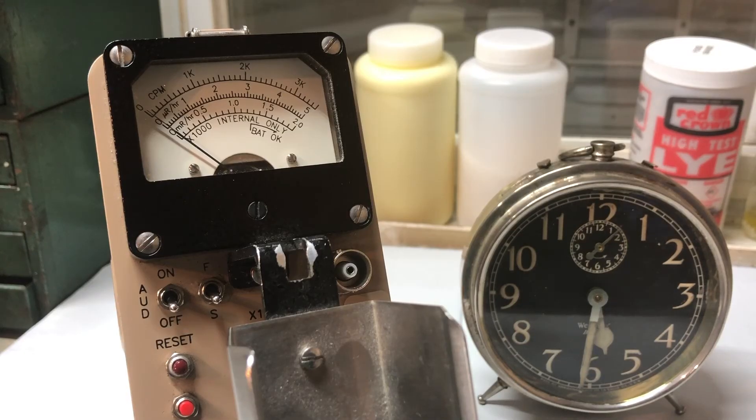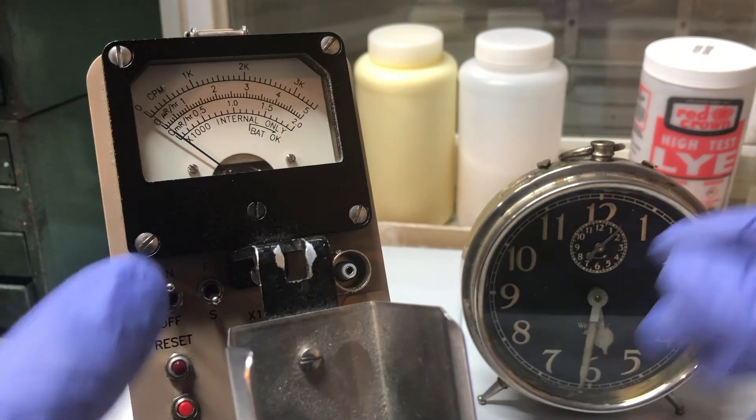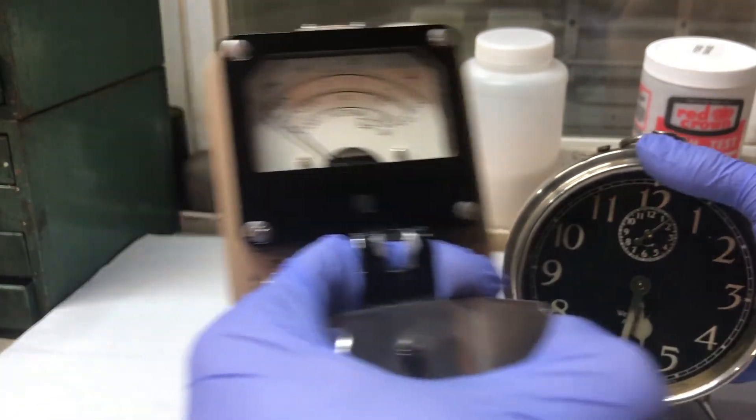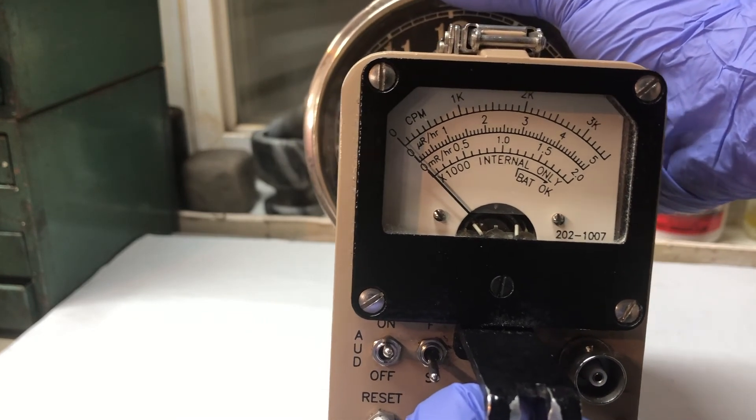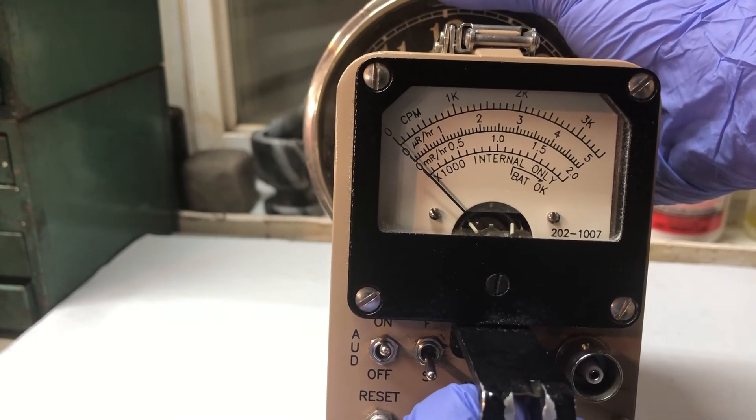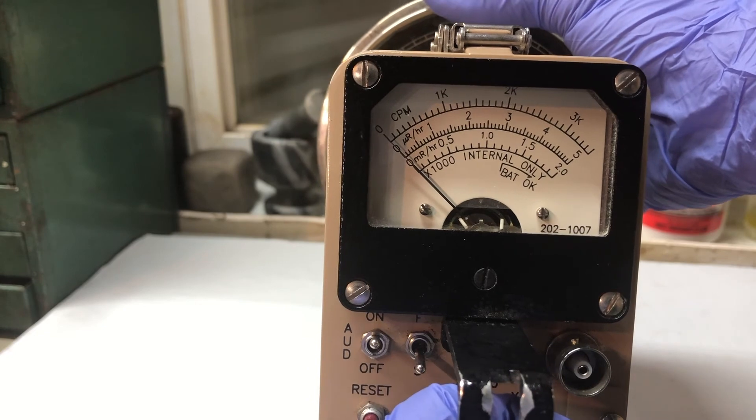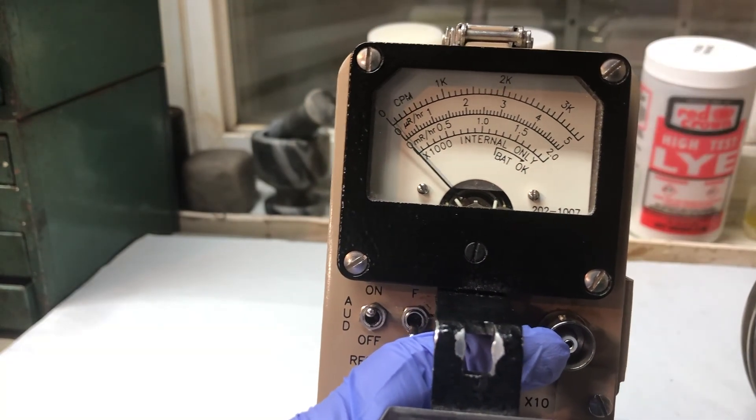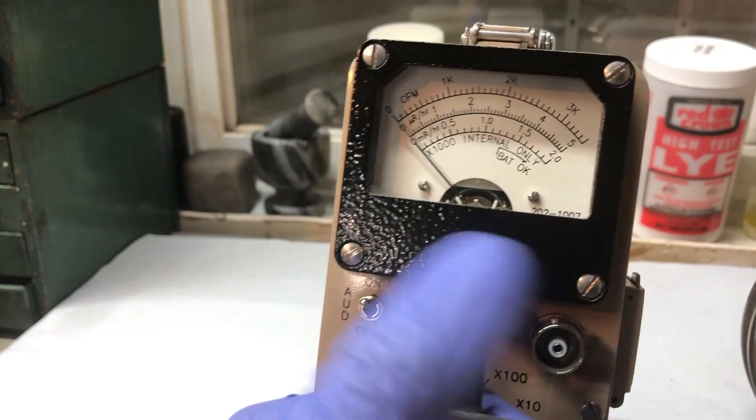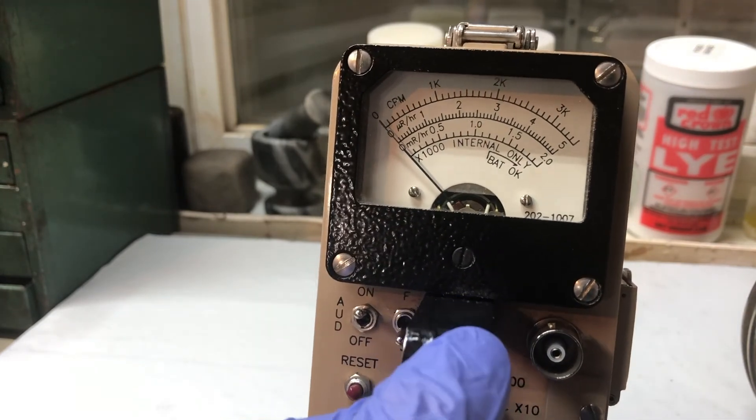So let's set it to times 1000 and turn the audio on and move the clock towards the back. The meter doesn't really move that much, but you can hear the audible chirping. The times 1000 is only in situations where you'll be exposed to high amounts of radiation and you need to measure it.